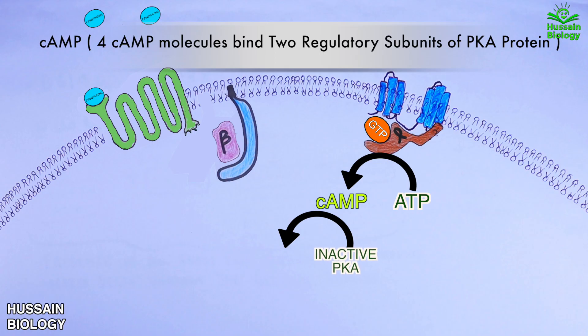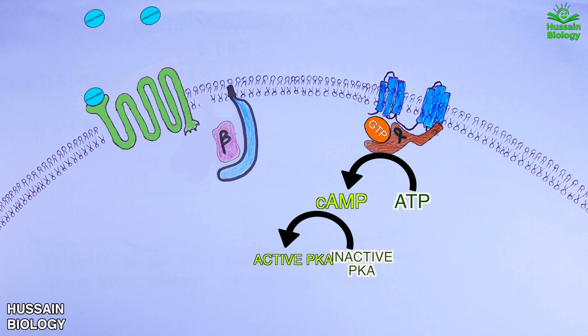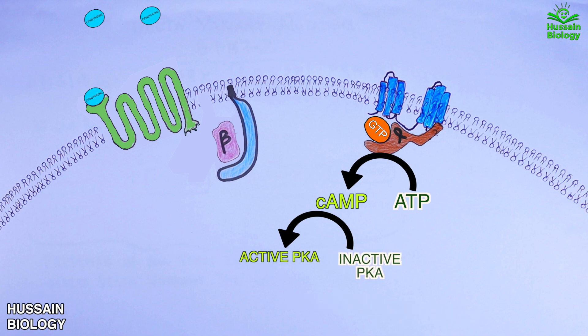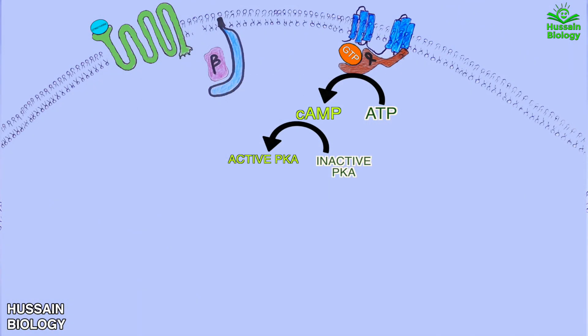The activated adenyl cyclase mediates the conversion of ATP to cyclic AMP. These cAMP molecules then attach to the inactive form of protein kinase A at its regulatory subunits, rendering the catalytic subunits of PKA active. This active PKA, in the form of catalytic subunits, drives the activation of different downstream enzymes.